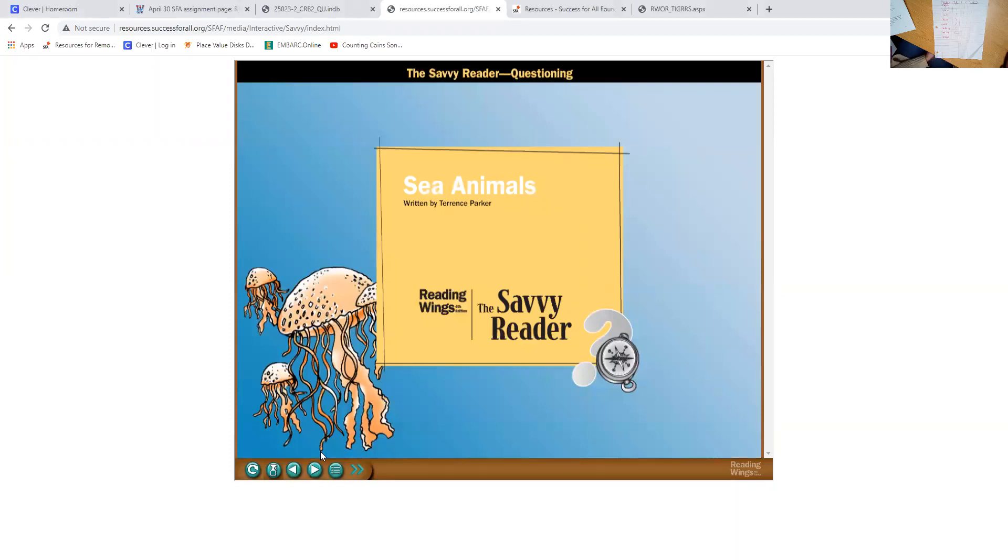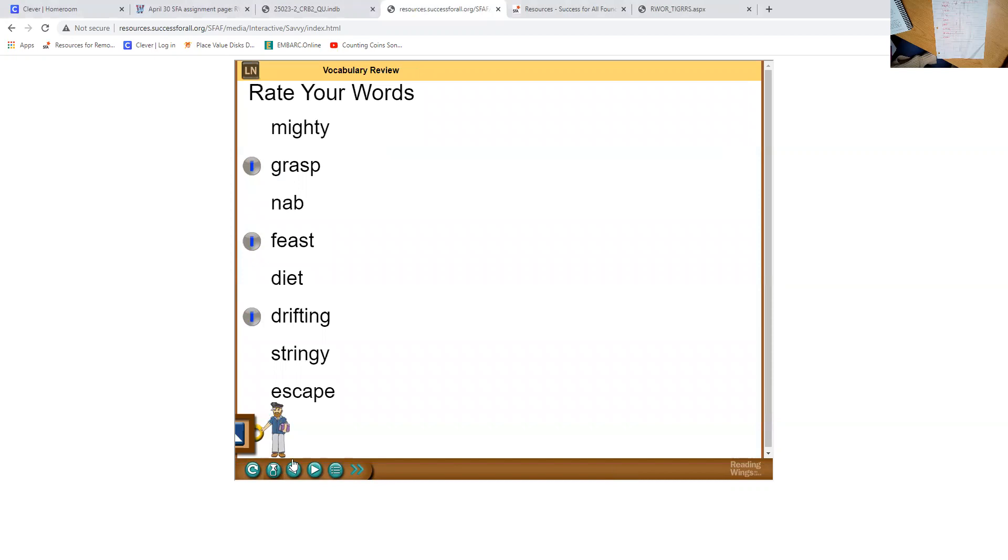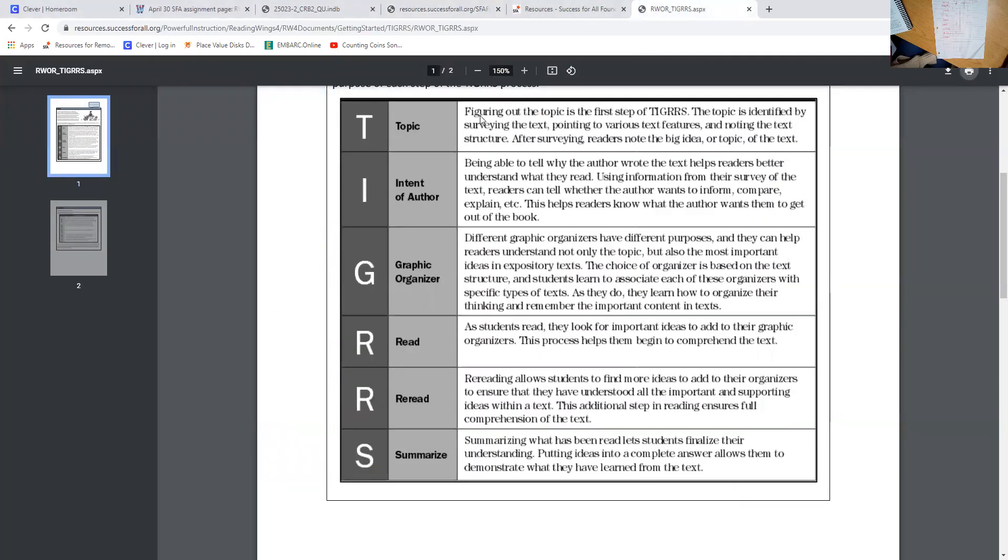In this cycle we're going to read a book called Sea Animals by Terrence Parker. As we read we're going to practice asking questions about information in the text. Asking questions helps check your understanding. Remember good readers use questions to check their own understanding and the understanding of their classmates. So this text is informational text. And we're going to use the TIGRRS process to help find all the important facts. The first part is to figure out the topic of the book.